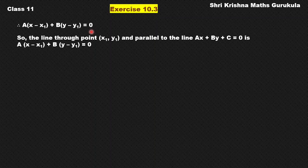This is what we had to prove. So the line through the point x1, y1 and parallel to the line Ax plus By plus C equal to 0 is this: A into x minus x1 plus B into y minus y1 is equal to 0. Hence proved. If you still have any doubt, please do mention it in the comment section.